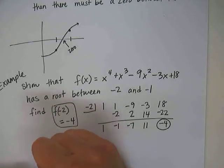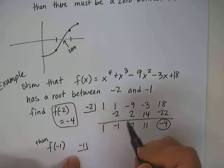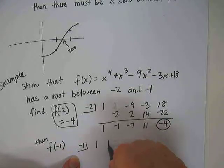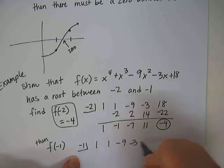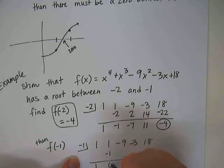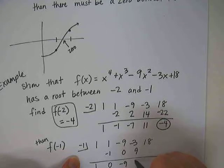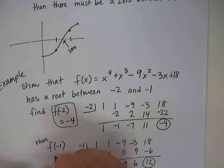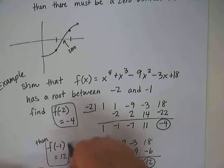Okay, then we do f of negative 1. Same thing. So negative 1, now this one might actually be easier to plug in instead of doing synthetic. Up to you. Bring down the 1, negative 1, 0, 0, negative 9, 9, 6, negative 6, 12. So at f of negative 1, the answer is 12.